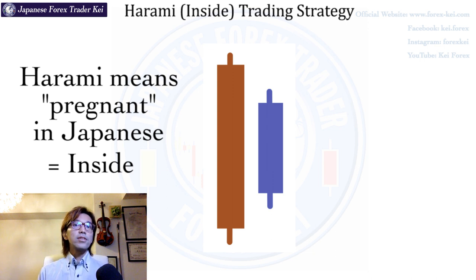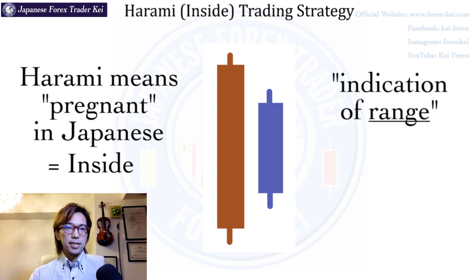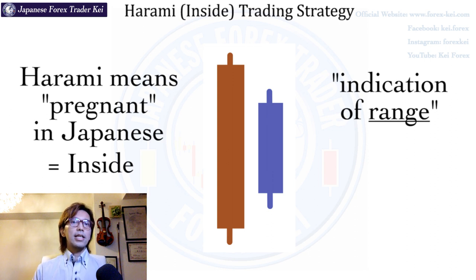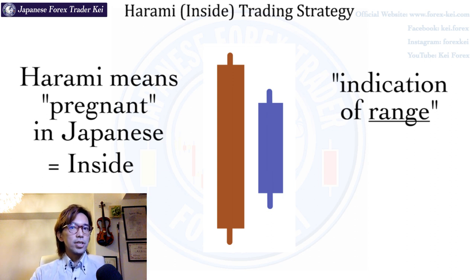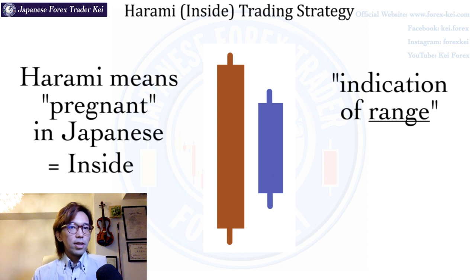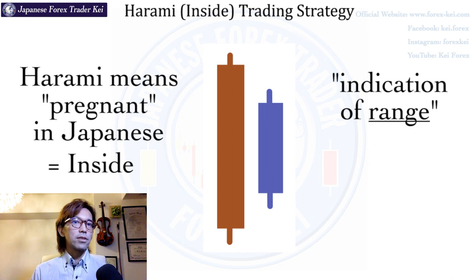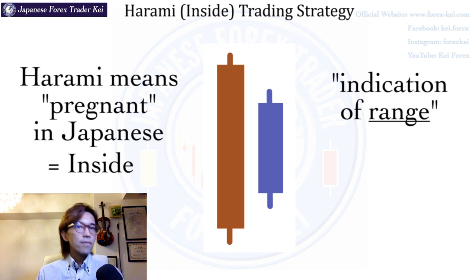When you see this harami pattern, it's a signal that there will be a range in the market. So when the market keeps going down and you see a harami pattern, that's an indication of the market being in a range while the major trend is bearish. In contrast, if you see the harami pattern when the market is on a bullish trend, it can also be an indication that the trend might go into a range after you confirm the second candle close. You can expect less volatility in the market while it's on an uptrend.